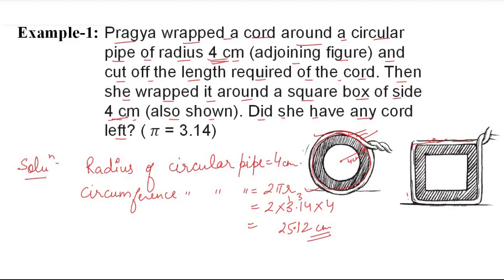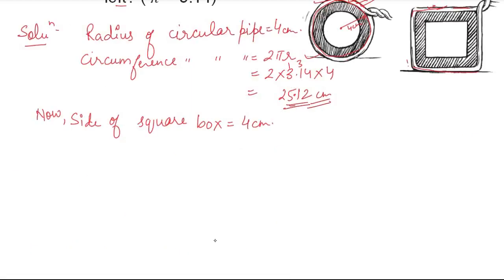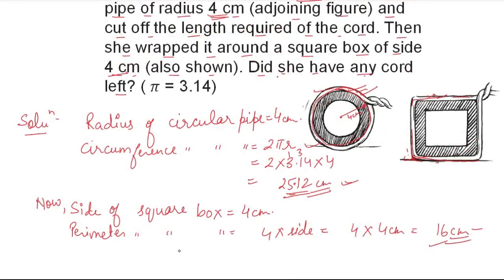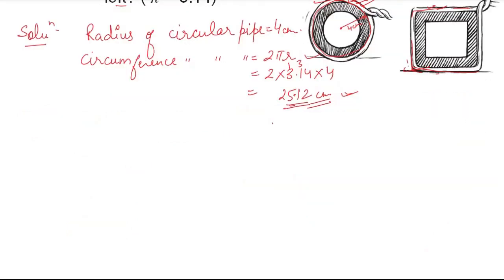So the circumference of the circular pipe comes out to 25.12 cm. Now for the square box with side 4 cm — to wrap around the square box means we find the perimeter. The perimeter of the square box is equal to 4 into side, that is 4 into 4 cm, which becomes 16 cm.